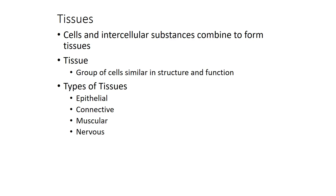Epithelial and connective tissues are primarily structural tissues. Muscular tissue is what forms muscles and makes movements happen. And nervous tissue is what forms the nervous system and transmits commands throughout the body.